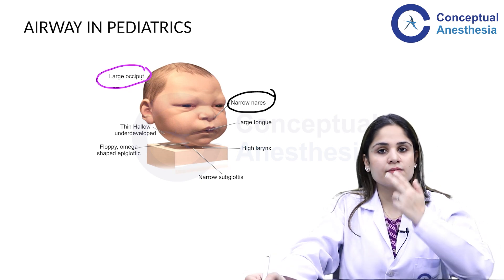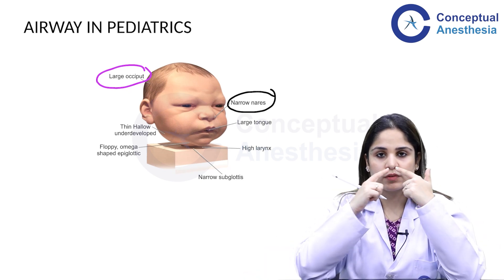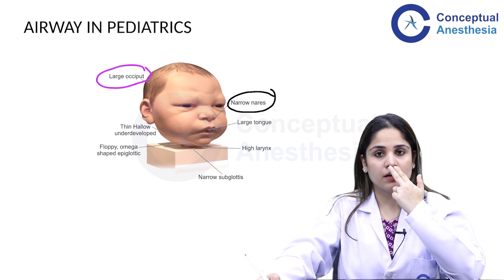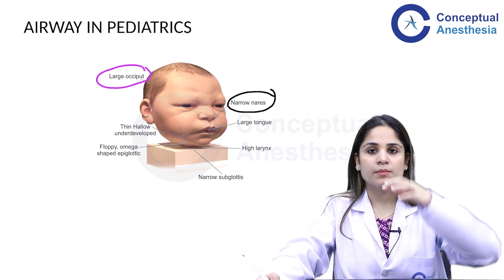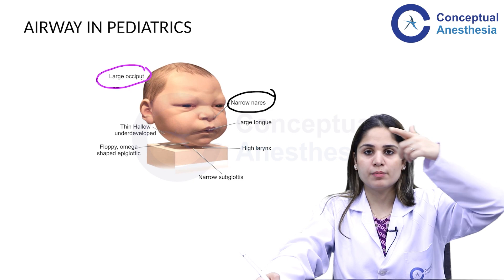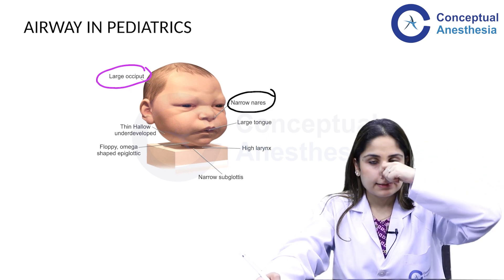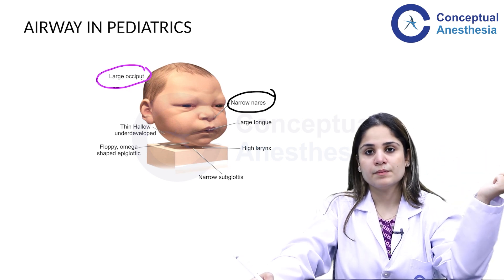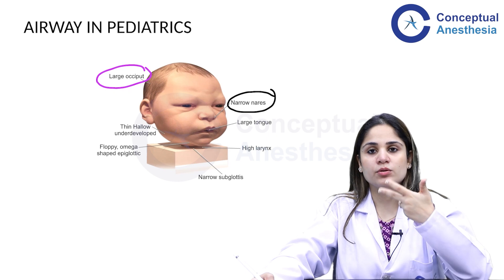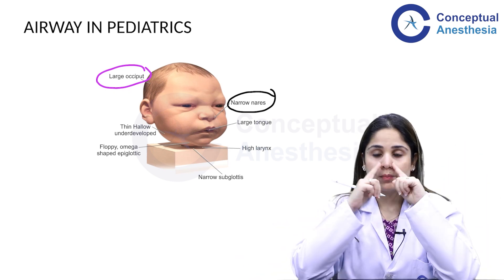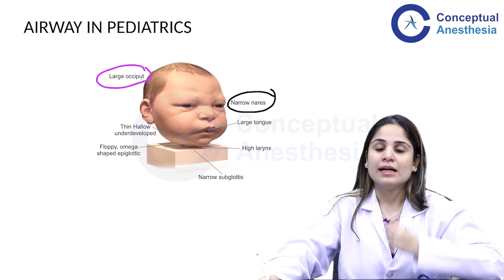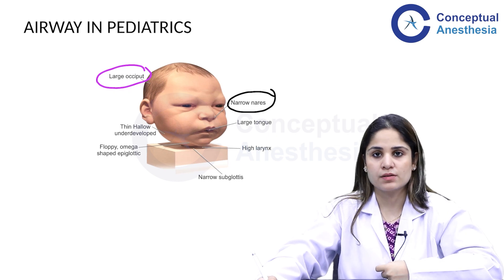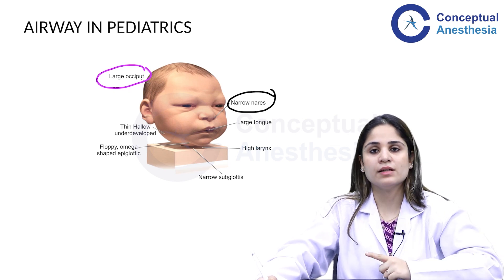Second, children have narrow nares — the anterior nasal openings. Because they have narrow nares and are obligatory nose breathers, they cannot breathe through their mouth. Unlike adults who can mouth-breathe when the nose is blocked, children cannot follow commands to do so and can become hypoxic. Since the nares are so narrow and children often get URTIs, these nares can get completely blocked by secretions, so you must ensure the nasal passages are completely free.